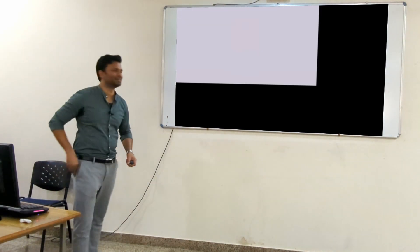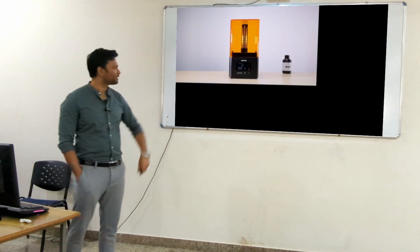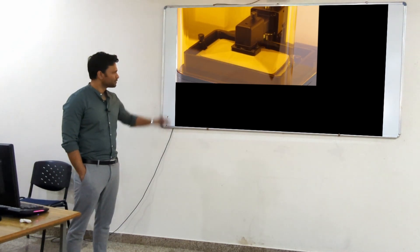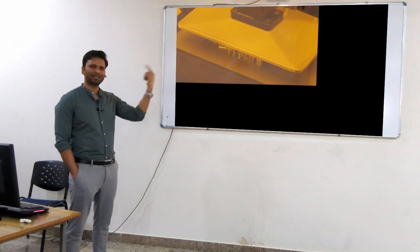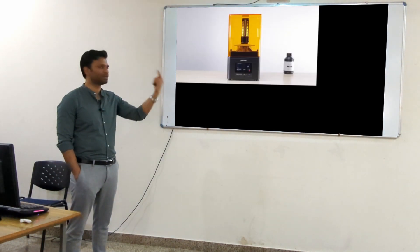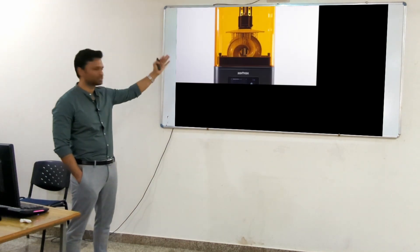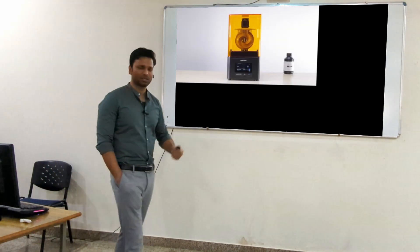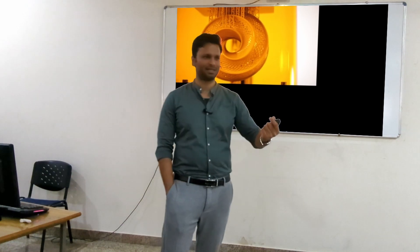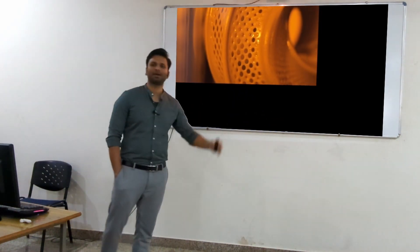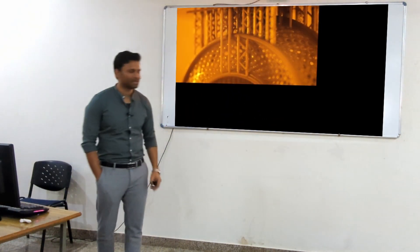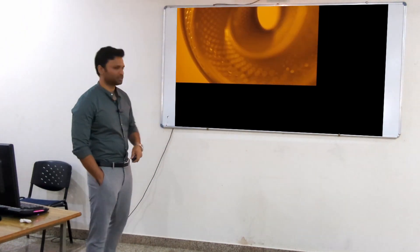This is the DLP printer. The build plate moves out and light cures the resin on the build plate. Gradually, layer by layer, this is being printed. This curing, this printing, is being done by the light source. So this is comparatively faster - not comparatively, significantly faster. The mandible which took six hours prints in approximately one hour in this.